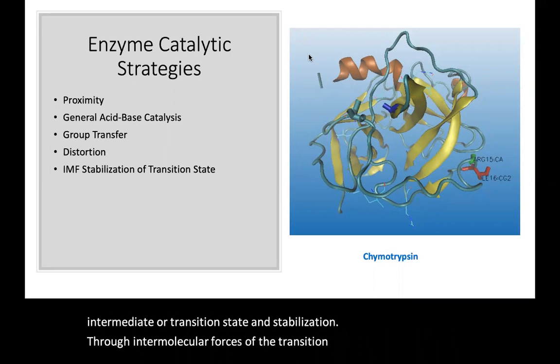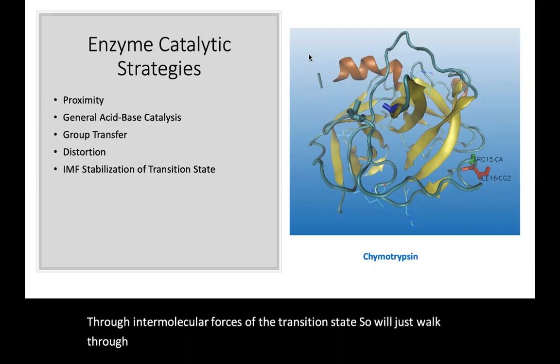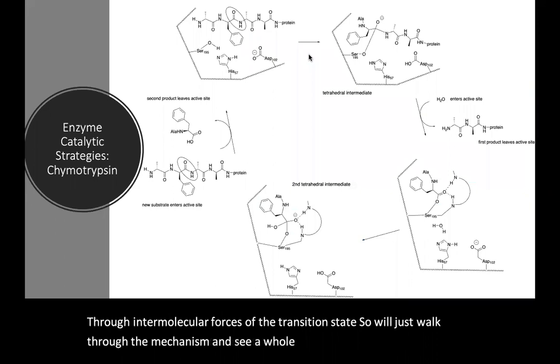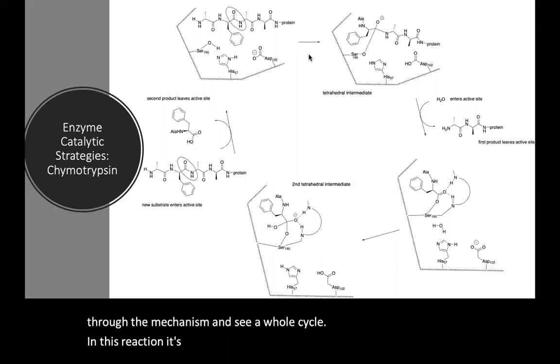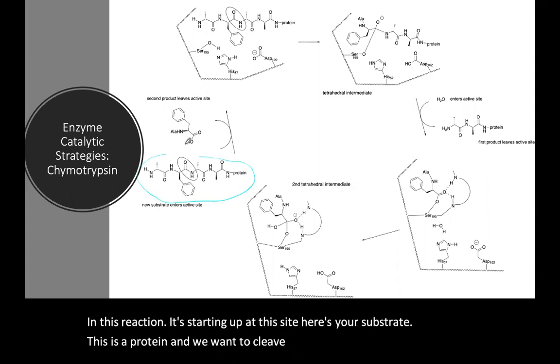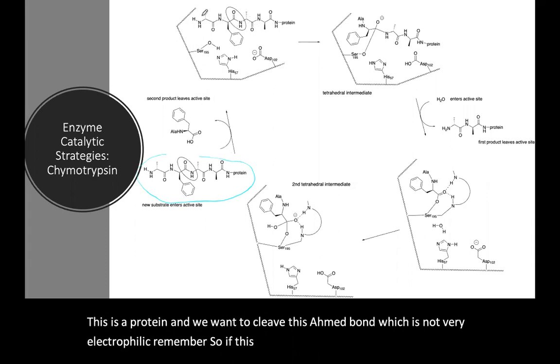So we'll just walk through the mechanism and see a whole cycle. In this reaction it's starting up at this site. Here's your substrate. This is a protein and we want to cleave this amide bond which is not very electrophilic. So this moves into the active site, so here it is in the active site and here's the catalytic triad.